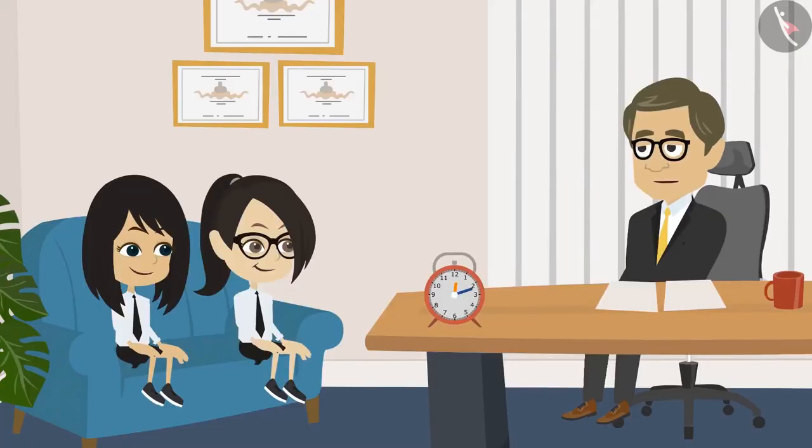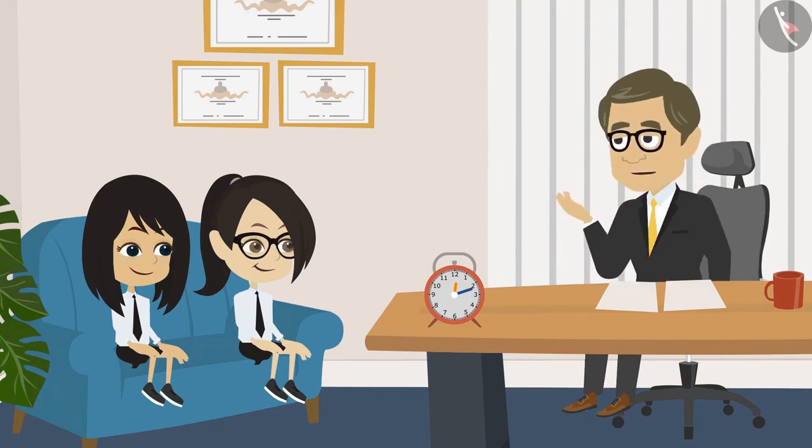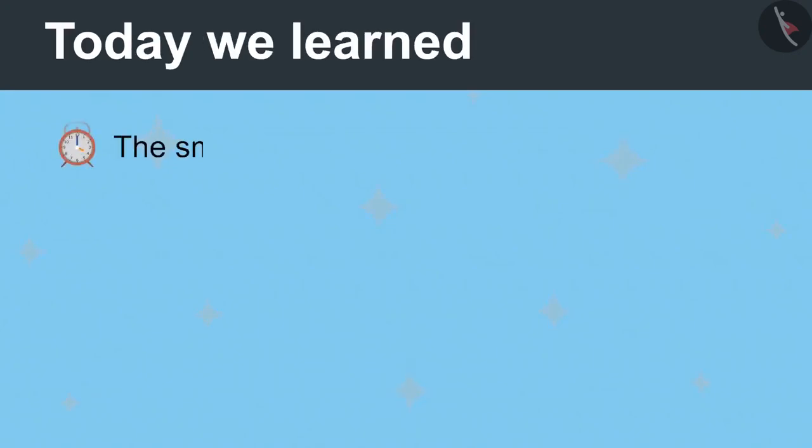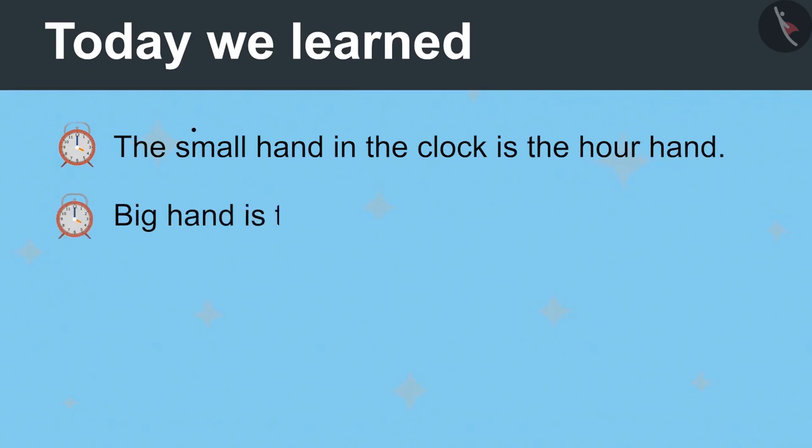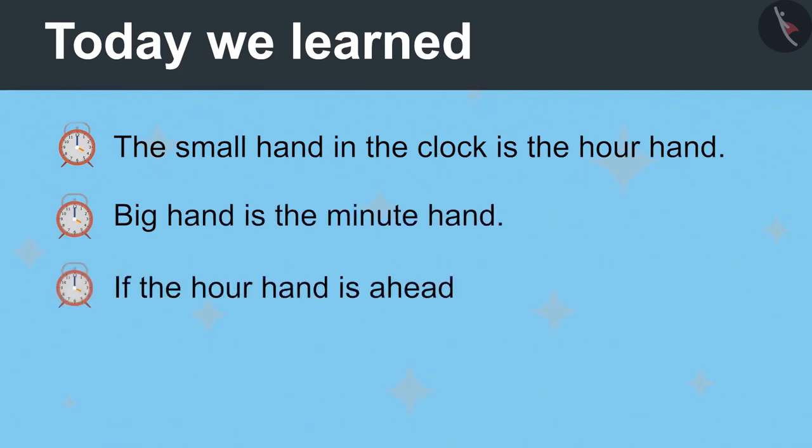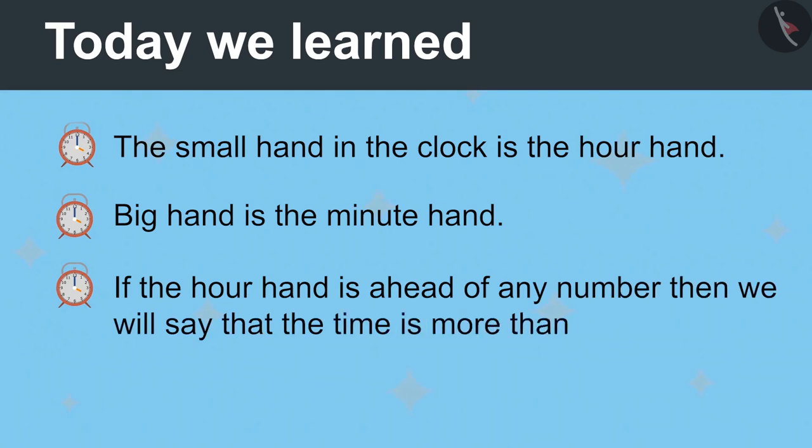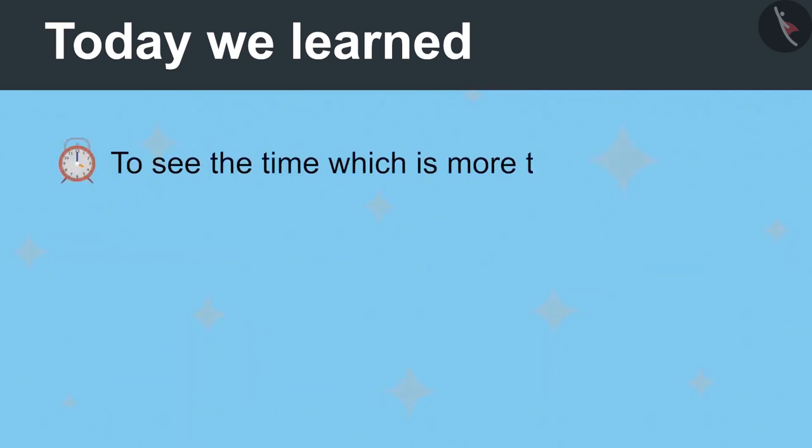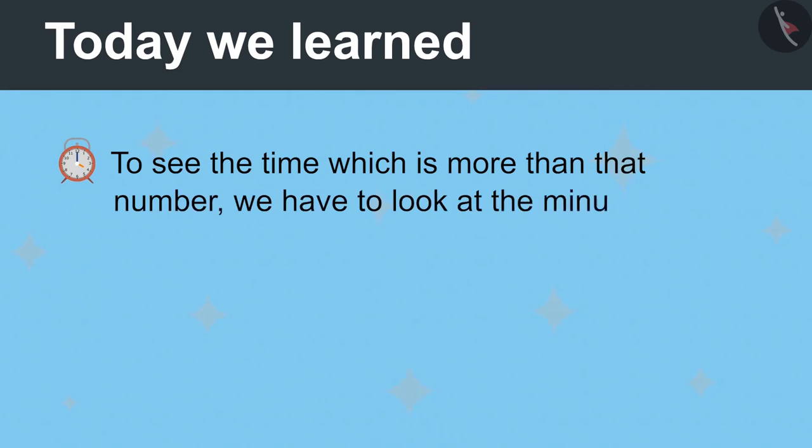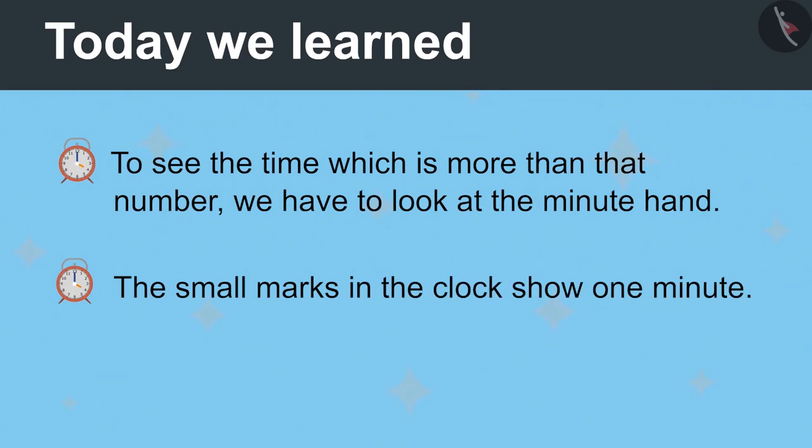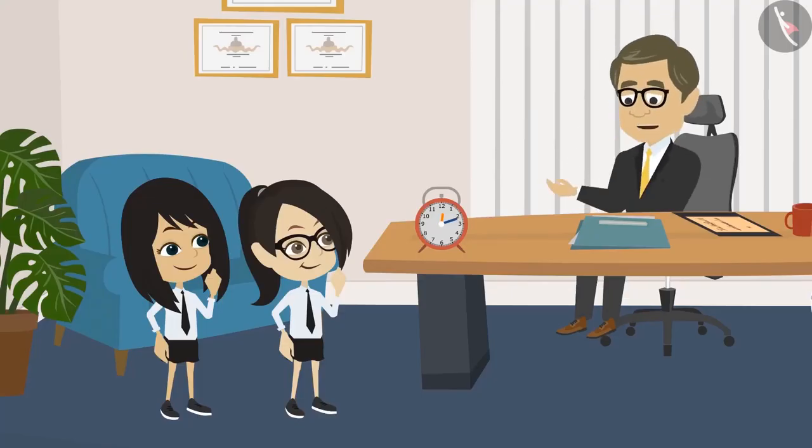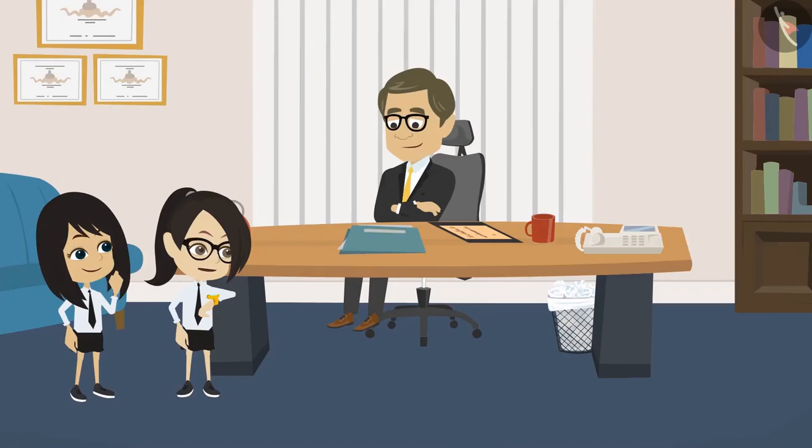Wow, Neha and Vandana. Now you have learned to look at the clock very well. Tell me once, what have you learned today? Sir, we learned that the small hand in the clock is the hour hand and the big hand is the minute hand. If the hour hand moves ahead of any number, then we will say that the time is more than that number. And to see the time which is more than that number, we have to look at the minute hand. The small marks in the clock show one minute. Very good. Now you can look at the clock and tell the time. Thank you, sir. Our class is about to start. We will go now.